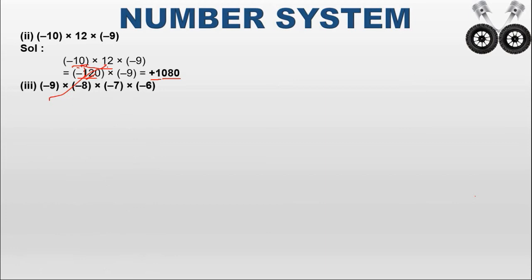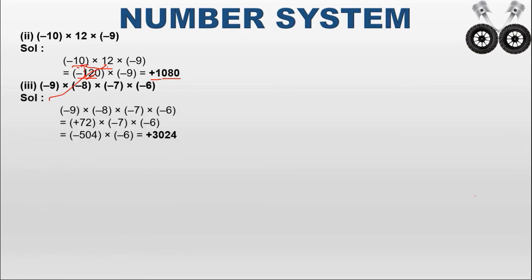Next: minus 9 into minus 8 into minus 7 into minus 6. First, minus 9 into minus 8: same sign (both negative), so the result is positive 72. Then 72 into minus 7: different signs, so the result is negative. 72 into 7 equals 504. Finally, minus 504 into minus 6: same sign (both negative), so the result is positive. 504 into 6 equals 3024.